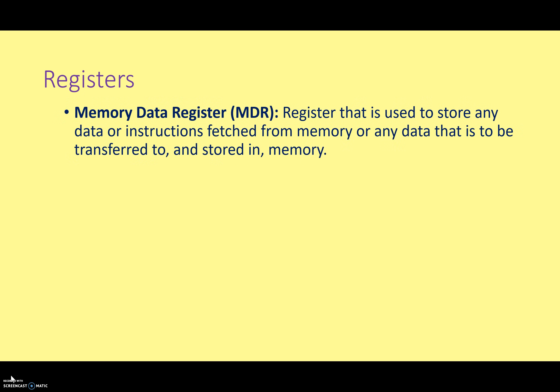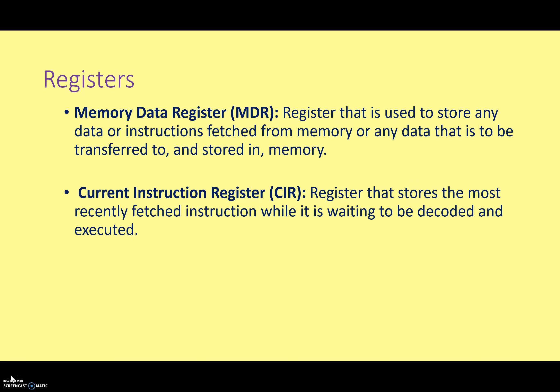The memory data register, or MDR, is the register used to store the data or instructions that have been fetched from memory, or the data that is going to be transferred to and stored in the memory. So it's not holding the memory location or the address — it's actually holding the data or instruction itself. We also have the current instruction register, which stores the most recently fetched instruction while it's waiting to be decoded and executed by the computer. So if the memory data register pulls data from memory and it turns out to be an instruction, that is then passed on to the current instruction register where it's processed.